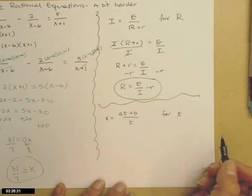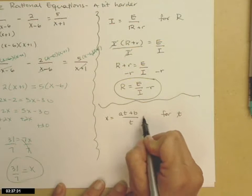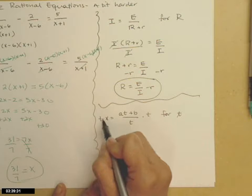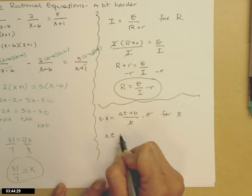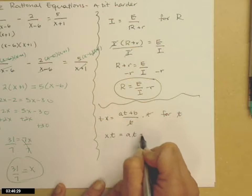So, a couple of ways you can do it again. I'm going to go ahead and multiply both sides by t. Think cross multiply, same thing. The t's cancel on the right. Get x times t equals a times t plus b.